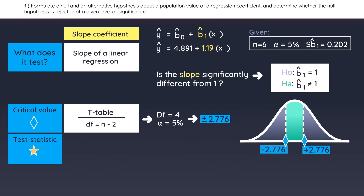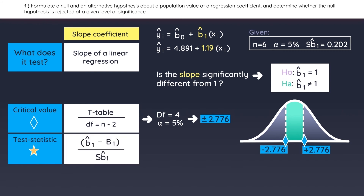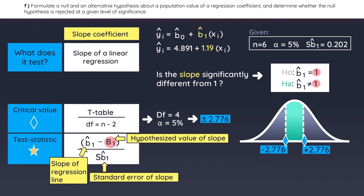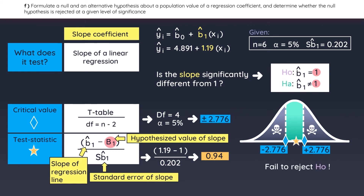Next, we need to calculate the test statistic. It is equal to the slope coefficient of the linear regression minus the hypothesized value, divided by the standard error of the slope coefficient. The standard error will usually be given. Plugging in the appropriate values, the test statistic equals 0.94. Since the test statistic does not fall in the rejection area, we fail to reject the null hypothesis — meaning the slope coefficient is not statistically different from one.